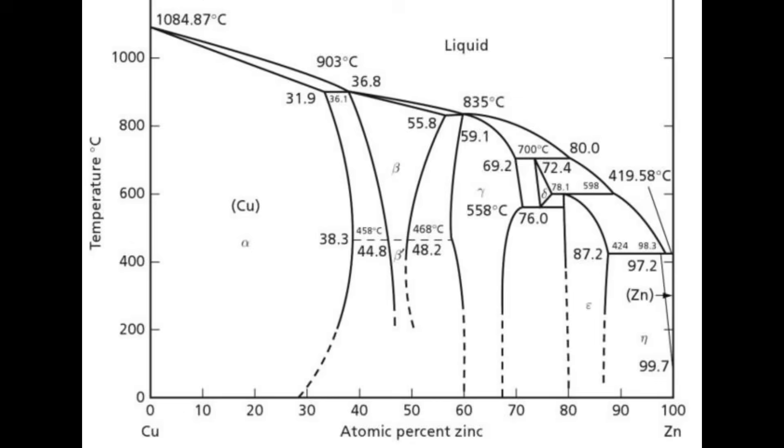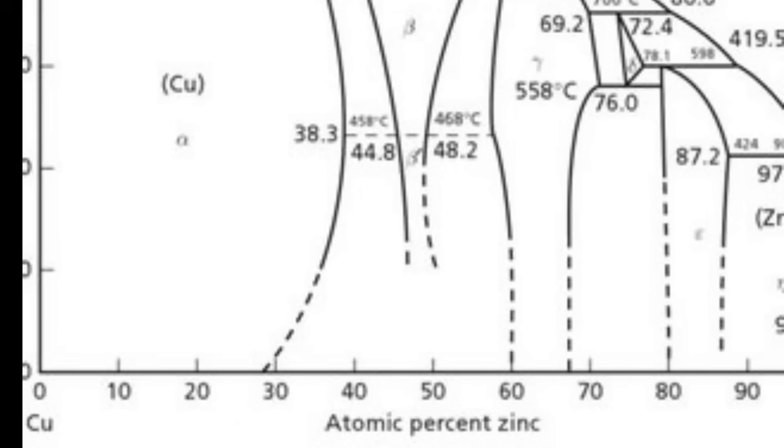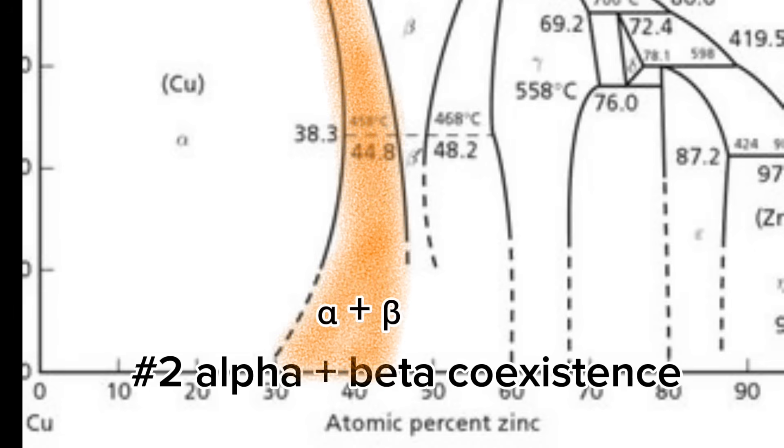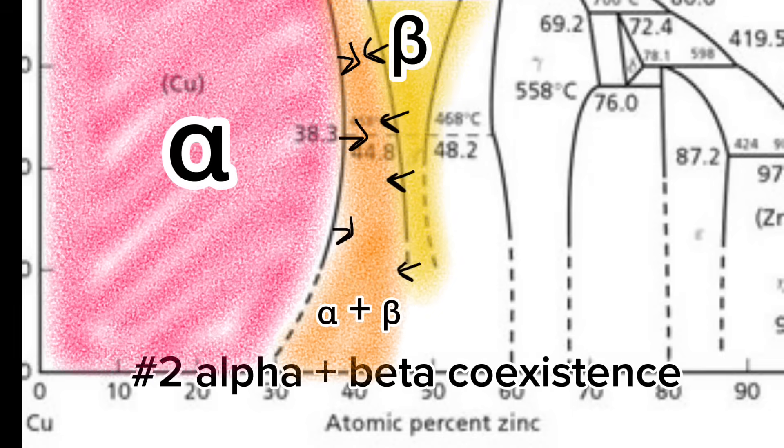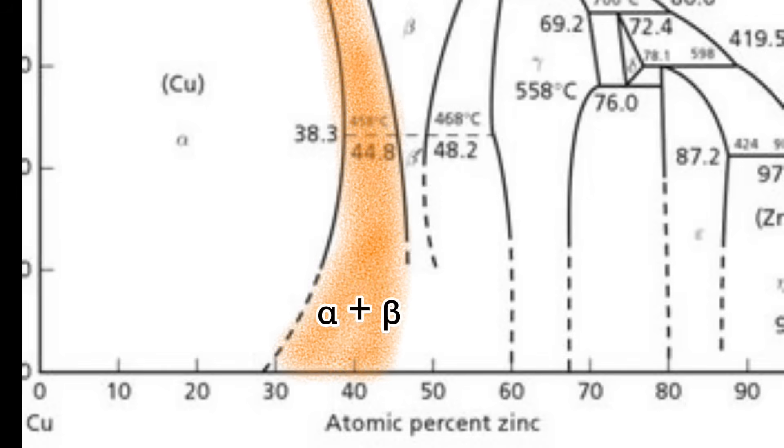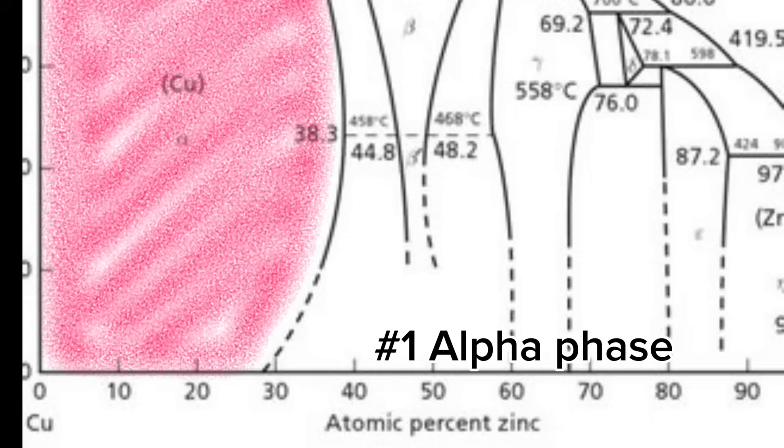Let's take this knowledge and apply it to a phase diagram of a different material system, that is the copper zinc material system. And let's take a closer look at this specific region right here. There are two things that I'm interested in this phase diagram: the alpha phase and the area of coexistence between alpha and beta phase.